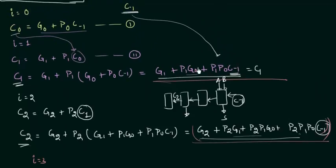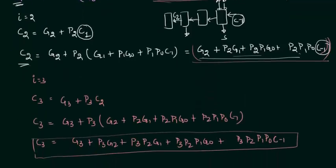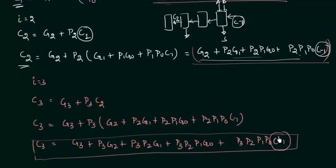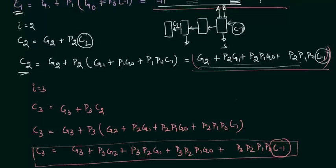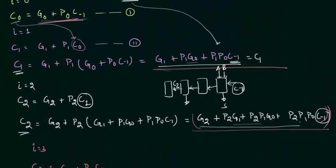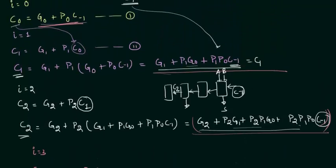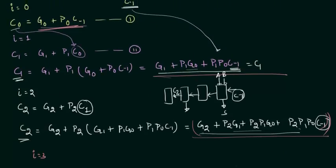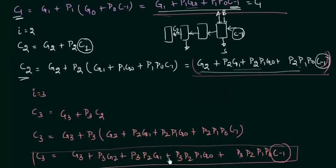All four carries c0, c1, c2, and c3 have only c-1 as the carry term on the right-hand side, so they can all be evaluated directly. We now need to implement this circuit so that we can compute both the sum and carry outputs.